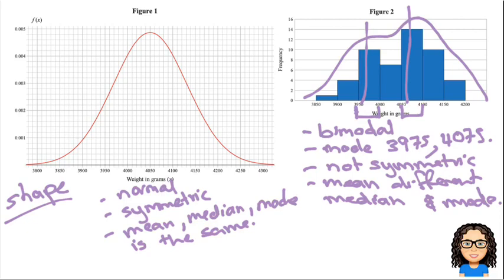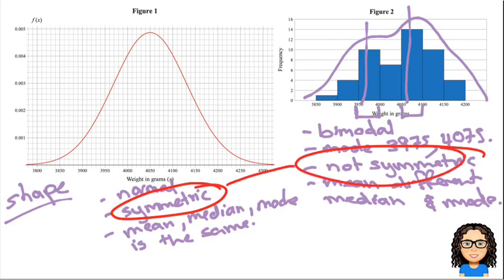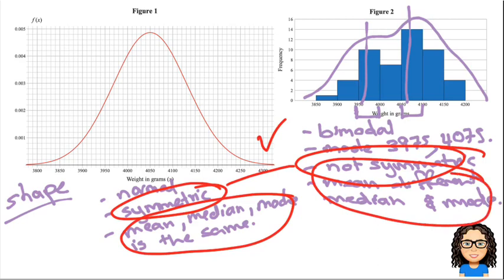So in terms of marking, if you were able to categorize and say this was a symmetric distribution versus a non-symmetric distribution, that would get you one point. If you were able to talk about how the mean, median, mode are the same versus them being different, that would be a second point.